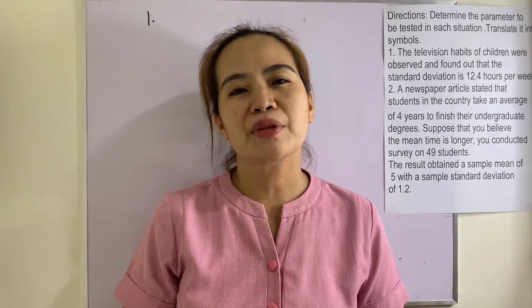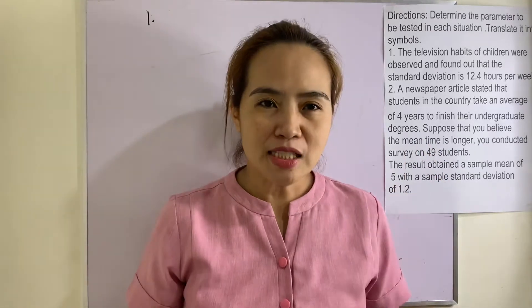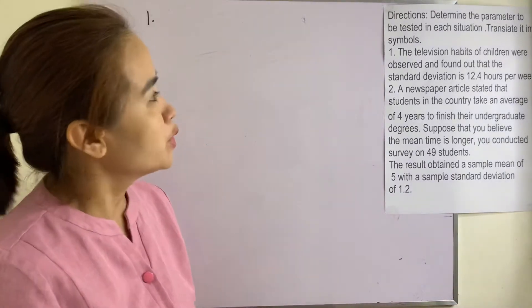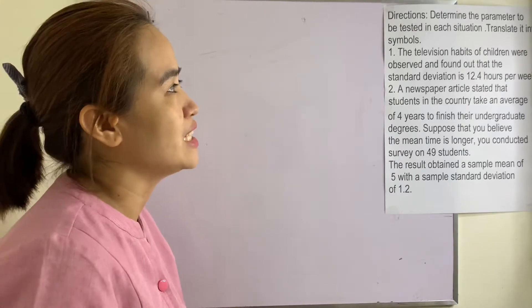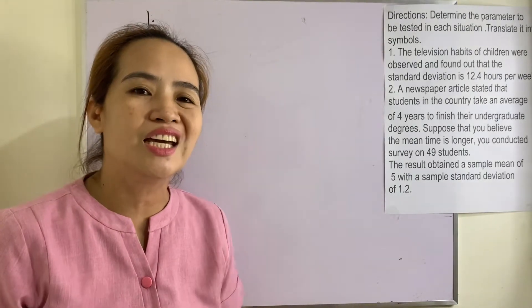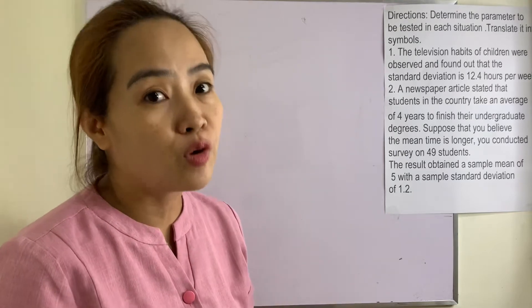Hey everyone, welcome back to my channel. Our most essential learning competency in this session is to identify the parameter to be tested given in a real-life situation. Let's do it. Determine the parameter to be tested in each situation and translate it into symbols. We know that a parameter is a descriptive measure of the population — it can be the mean, the standard deviation, or the variance.